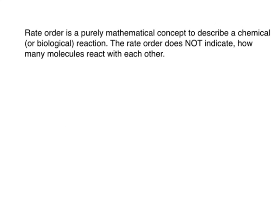First of all we need to be absolutely clear what rate order means. Rate order is just simply a mathematical concept that helps us to describe a chemical or biological reaction. A rate order does not indicate how many molecules react with each other — that would be the term molecularity. So rate order is just simply a mathematically defined concept.